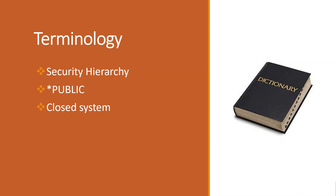The difference between a closed system and an open system: a closed system is a security system designed to close the system off to users and grant access back as needed. And job-based versus process-based roles — job-based roles are built around different jobs, as opposed to process-based roles, which are built around the processes within the job.